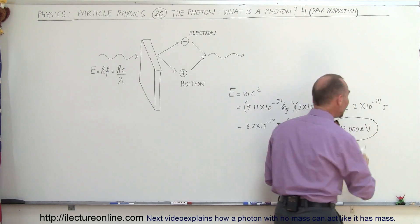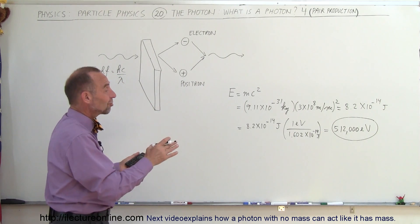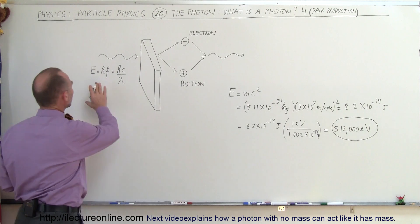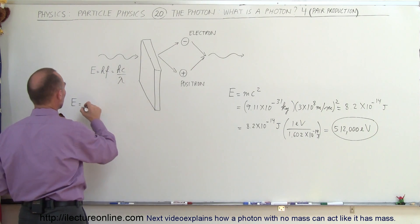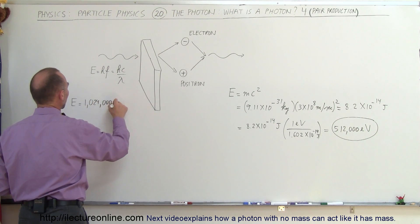So that's the amount of energy you need to make an electron, and of course that would also be the amount of energy you need to make a positron, because the positron is the exact same amount of rest mass. So the energy required here, energy for the photon, would have to be equal to 1,024,000 electron volts.